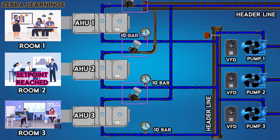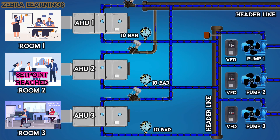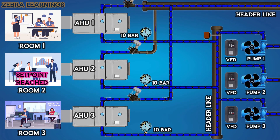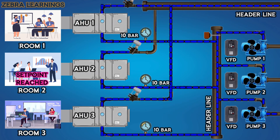If a 2-way valve is used in the AHU, a VFD is used in the pumps. Because when the 2-way valve opens and closes, the speed of the pump should be increased or decreased through the VFD. By this, a constant pressure can be maintained in the pipeline.